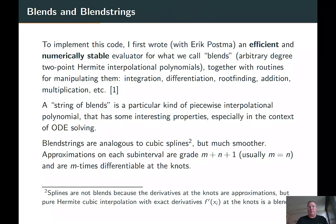To implement this, I first wrote an efficient and numerically stable evaluator for blends, together with routines for manipulating them: integrate, differentiate, root find, add them together, multiply them together, all that sort of stuff. Blendstrings are just—you have an approximant on one piece and another approximant next door to it, and they share the derivative information in the middle. So you wind up with piecewise polynomials on multiple pieces but with a high degree of continuity at the joints.